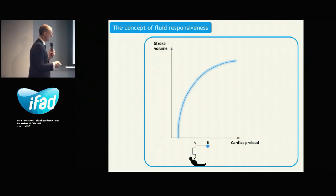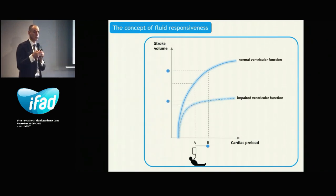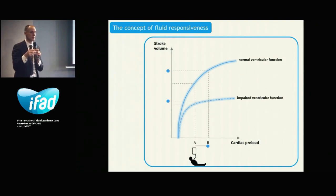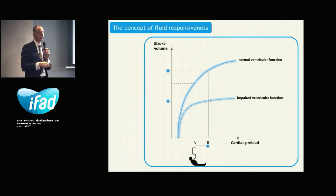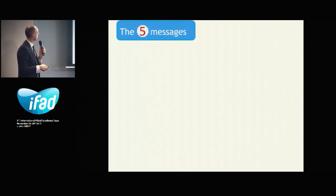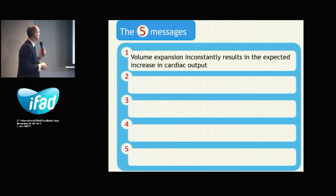The problem is that there is not just one slope, but several slopes of the Frank-Starling curve depending on left ventricular function. This explains why the same volume expansion with the same increase in cardiac preload could lead to a positive or negligible increase in stroke volume. Without predicting fluid responsiveness, only half of patients respond to fluid administration by a significant increase in cardiac output. Volume expansion inconstantly results in the expected increase in cardiac output.